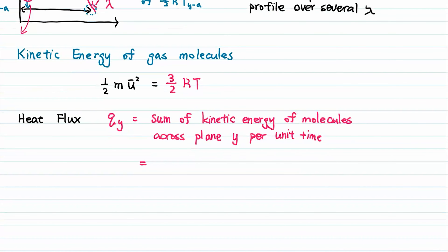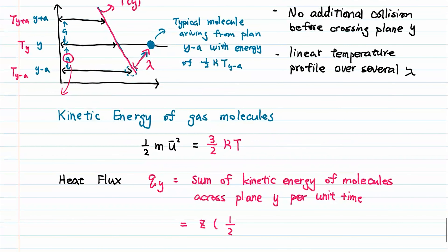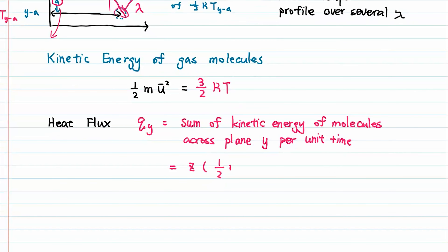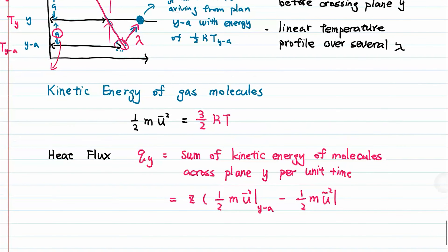Mathematically, q sub y equals the wall collision frequency times the kinetic energy coming in and going out. The kinetic energy coming in is from y minus a to y, and going out is from y to y plus a. So it would be one-half m u-squared at y minus a, minus one-half m u-squared at y plus a.